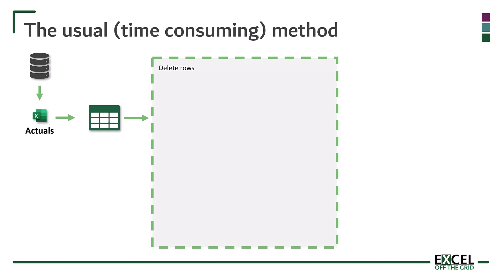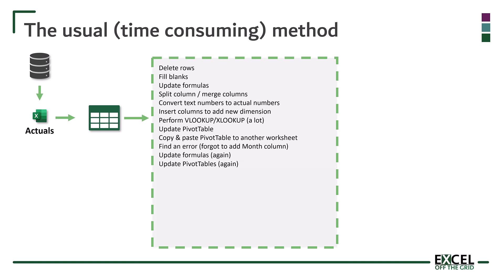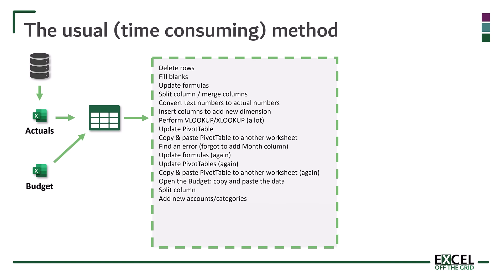This is where we need to delete rows, fill blanks, update formulas, split columns, merge columns. We need to convert numbers that have come across as text into actual numbers. We need to insert columns to add new dimensions. We need to perform VLOOKUP or XLOOKUP a lot. We then update pivot tables and copy and paste that pivot table to another worksheet. At that point, we find out that we've missed a step — we forgot to add a month column. So we need to go back and update the formulas again, then update the pivot tables again, and copy and paste the pivot table into another worksheet again. But it doesn't stop there, because we probably have some other data such as a budget, and we need to copy and paste that data into the worksheet. Then we need to split columns and add new accounts and categories and update formulas all over again.